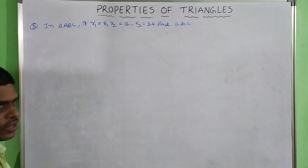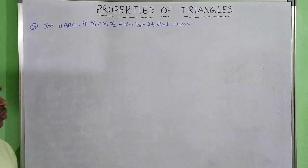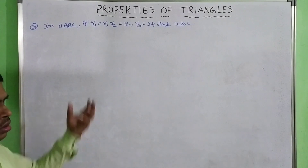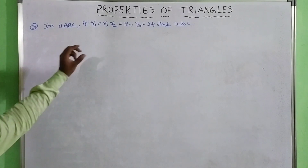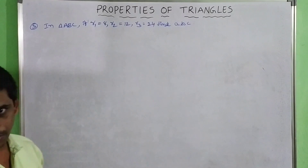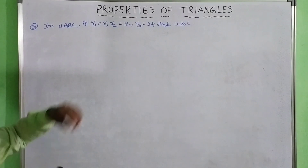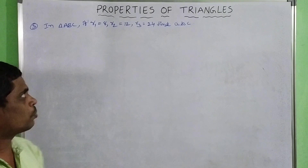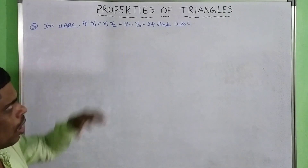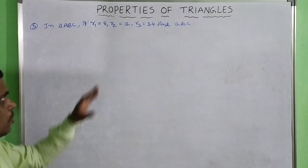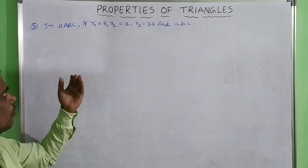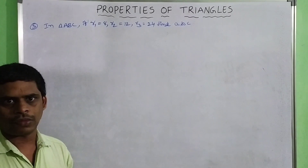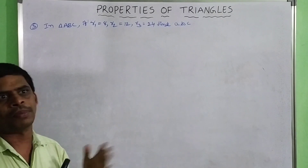Problem number 3. In triangle ABC, given R1 equal to 8, R2 equal to 12, R3 equal to 24, find ABC. The major difference between the previous problem and this problem: in the previous problem, R, R1, R2, and R3 were all given to find ABC. In this problem, only R1, R2, R3 are given — there is no value of R given. So first of all, we have to find the value of small r, then proceed similarly to the previous problem.